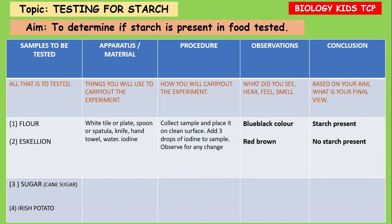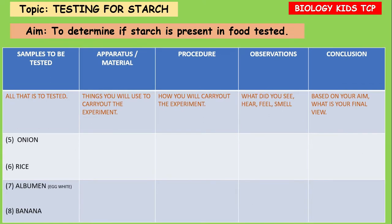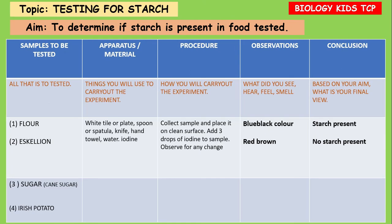Here we have tested flour and we got a blue-black color as the observation, which indicates that starch is present. We also tested another food substance and got a red-brown color, which is the color of iodine, indicating that no starch is present. So no starch was present when we tested escallion.